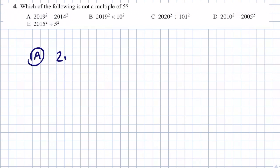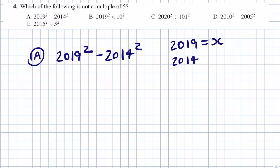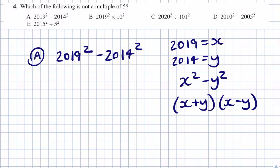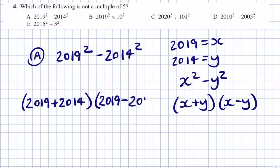Starting with A: 2019 squared minus 2014 squared. This can be rewritten using the difference of two squares. If we say 2019 is x and 2014 is y, then x squared minus y squared factorises to (x + y)(x − y). So we get (2019 + 2014) times (2019 − 2014), which is 4033 times 5. We can see that 2019 squared minus 2014 squared has 5 as a factor, so our answer is not A.